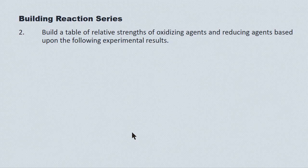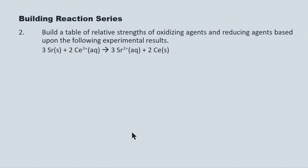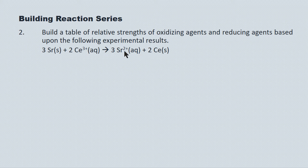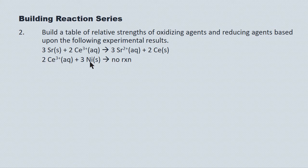Here's another question where we're asked to build a table. We have strontium reacting with the cesium 3+ ion, and the cesium 3+ ion strips electrons off the strontium — so cesium 3+ is a stronger oxidizer than the strontium 2+ ion. In the next example, metallic nickel reacts with the cesium 3+ ion and there's no reaction, meaning the nickel 2+ ion is a stronger oxidizer than the cesium 3+ ion. So when we build our table, we rank nickel above cesium, which is already ranked above strontium in oxidizing strength.